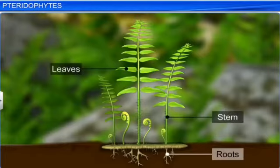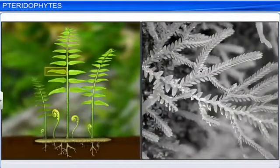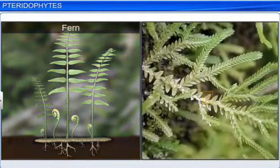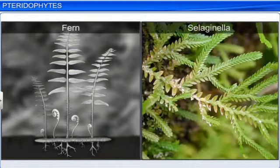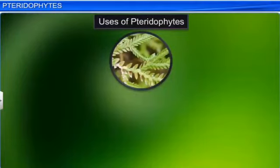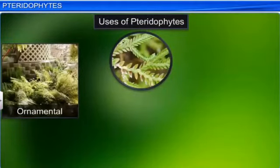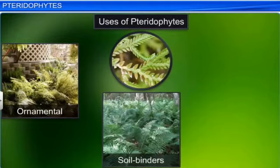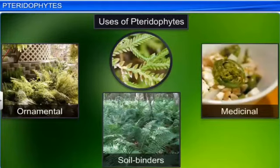They are categorized based on their structure — the root, the stems, and the leaves can be differentiated very well. The typical examples are the ferns and the Selaginella. Their uses include serving as ornamental plants, as soil binders, as well as for medicinal purposes.